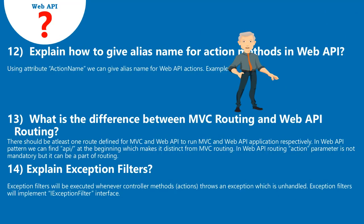Question 12: Explain how to give an alias name for action methods in Web API. Using the ActionName attribute, we can give alias names for Web API actions.